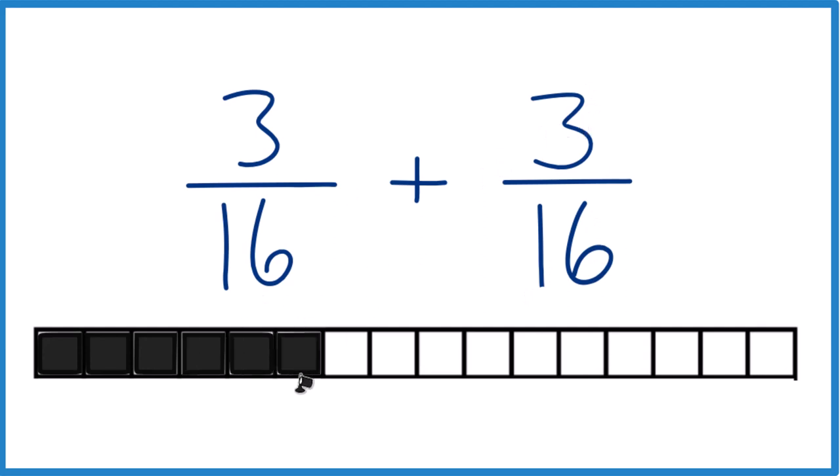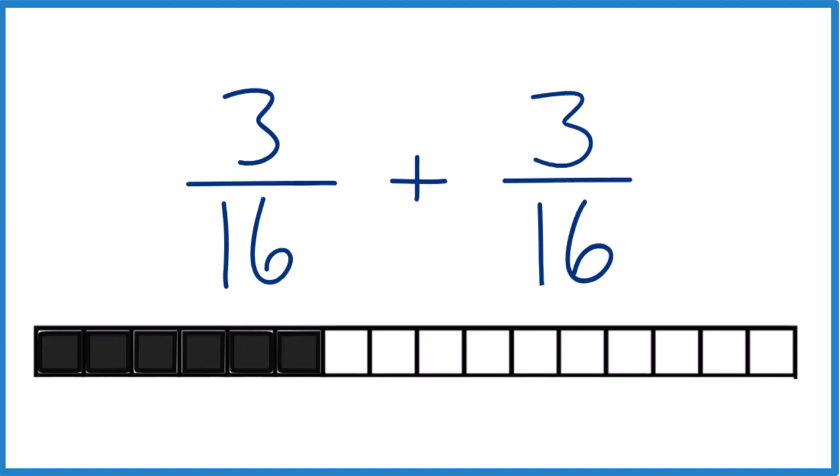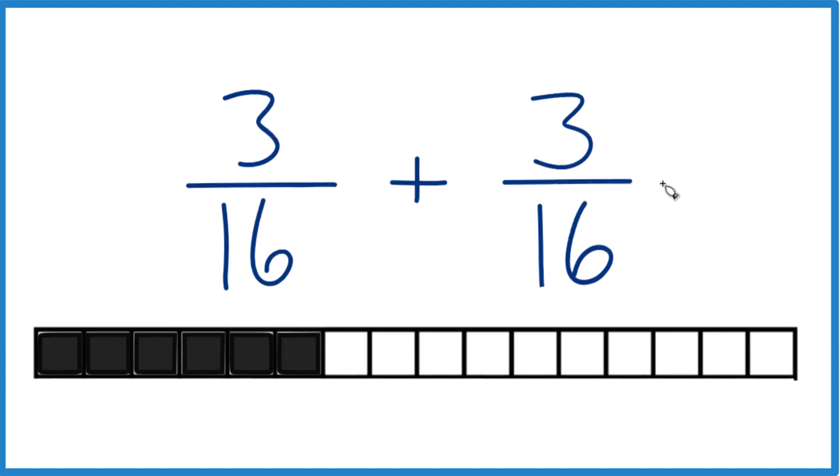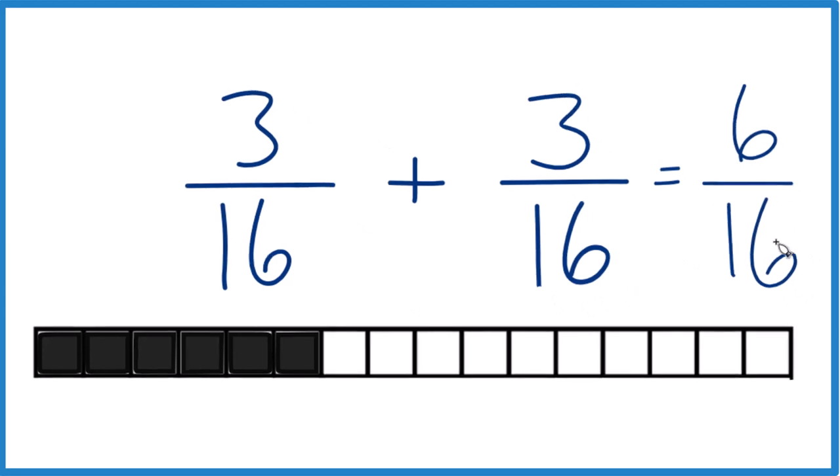One, two, three. You're going to get six blocks out of 16. So the answer is, we take three plus three, that gives us six, and then we keep the 16 the same. So 3 sixteenths plus 3 sixteenths is 6 sixteenths.